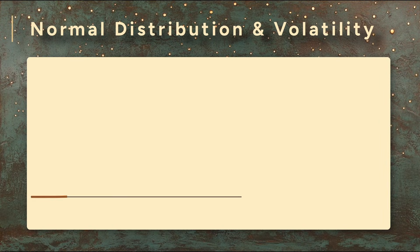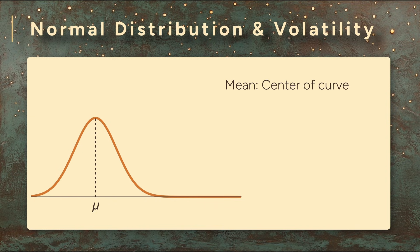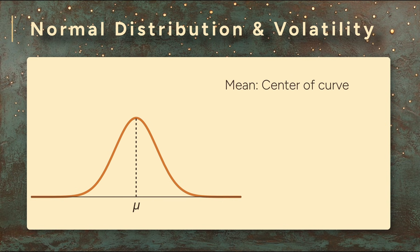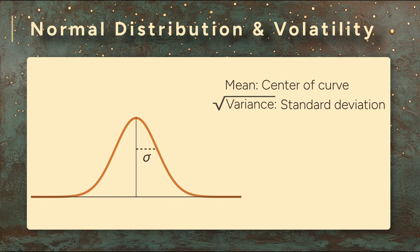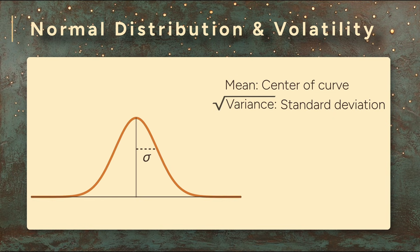That bell curve can be fully described with just two numbers. The first is the mean, the center of the curve. For daily returns, the mean is often very close to zero — some days up, some days down, but it averages out. The second number is the variance, or its square root, the standard deviation. This measures how spread out the returns are around that mean.